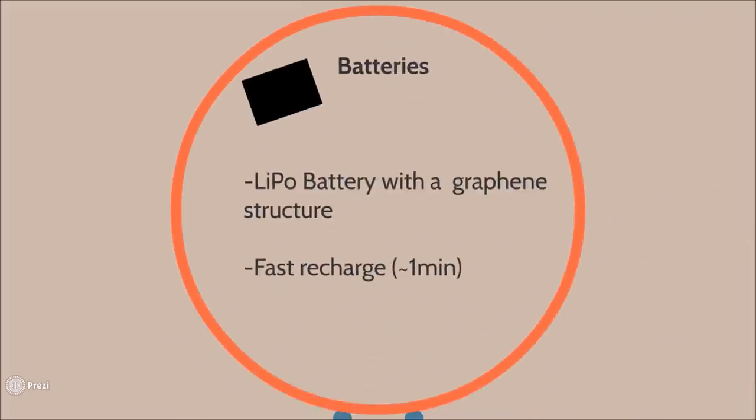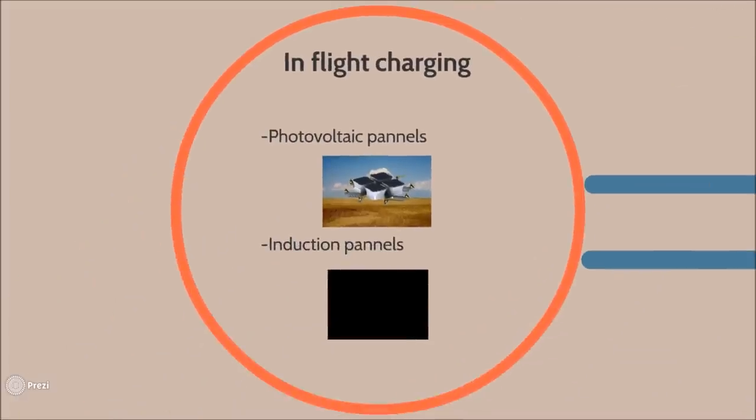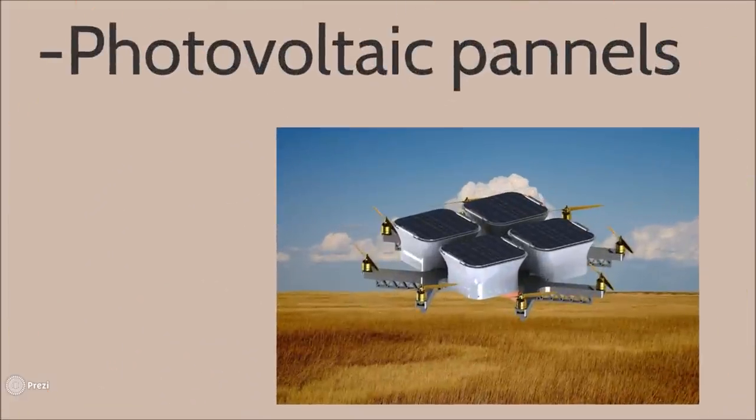The batteries would have a graphene structure reducing their charging time and increasing their capacity. They would be backed by an in-flight solar charging system.